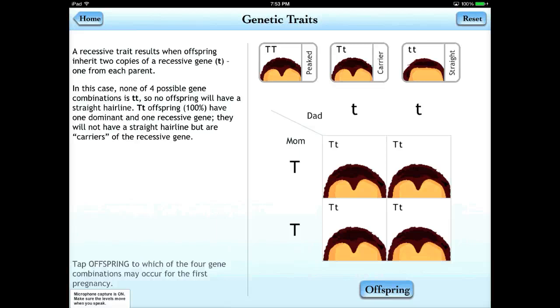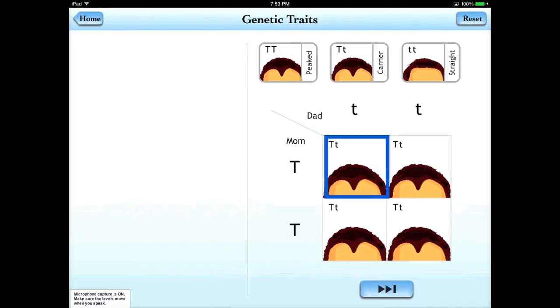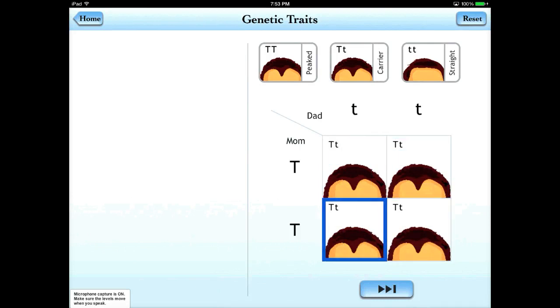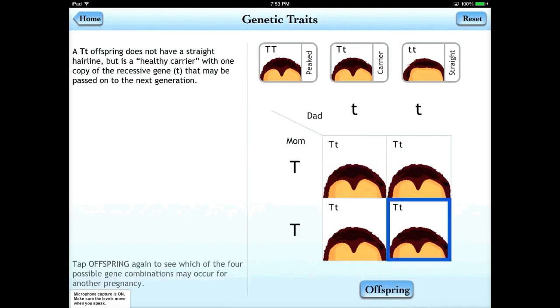It explains the results on the left-hand side. You can also tap 'offspring' and it shows you which of the four possible combinations are going to occur in another pregnancy.